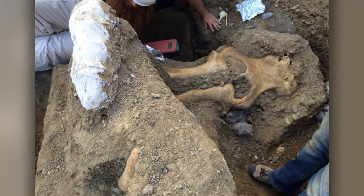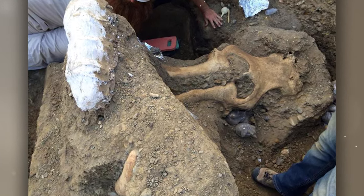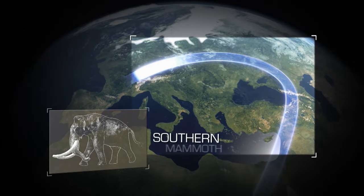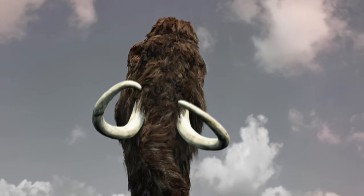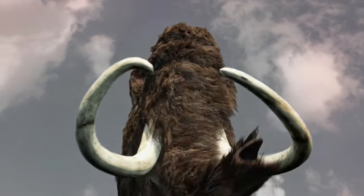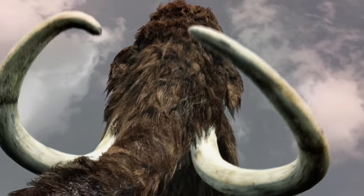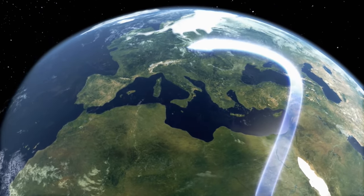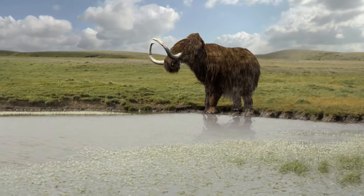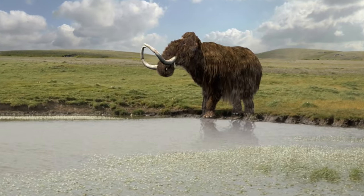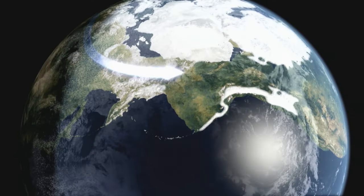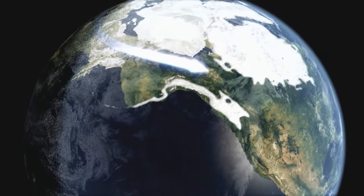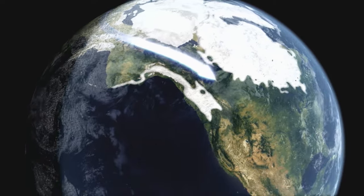The settlement of mammoths throughout the planet began with the southern elephant, or southern mammoth. It appeared in Africa about 2,600,000 years ago, and about 1.5 million years ago it moved across a land bridge to Europe and Asia. The same type of mammoth reached North America through the future Bering Strait. In Europe and Asia, the steppe mammoth originated from it, and in America, the Colombian mammoth.